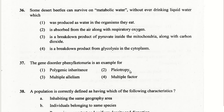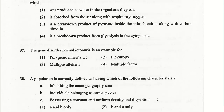The gene disorder phenylketonuria is an example of pleiotropy. A population is correctly defined as having the characteristic of inhabiting the same geographic area — that is an important characteristic in the definition of a population.